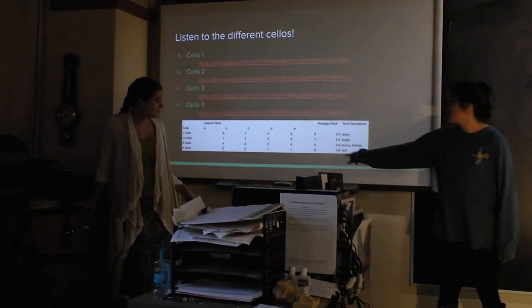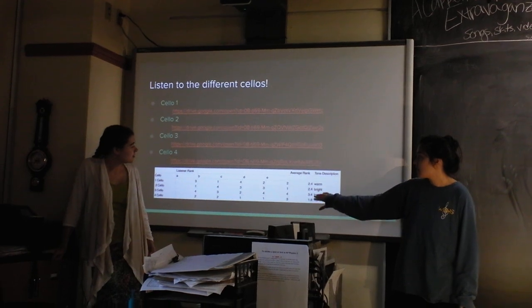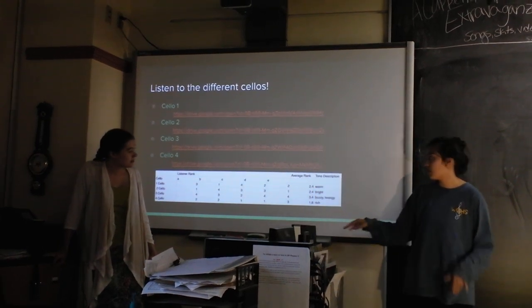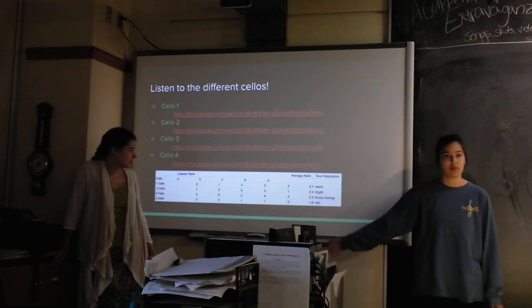You can see we ranked them average, and on average cello one and cello two were in the middle. Cello three was the worst and cello four, Emma's cello, was the best.